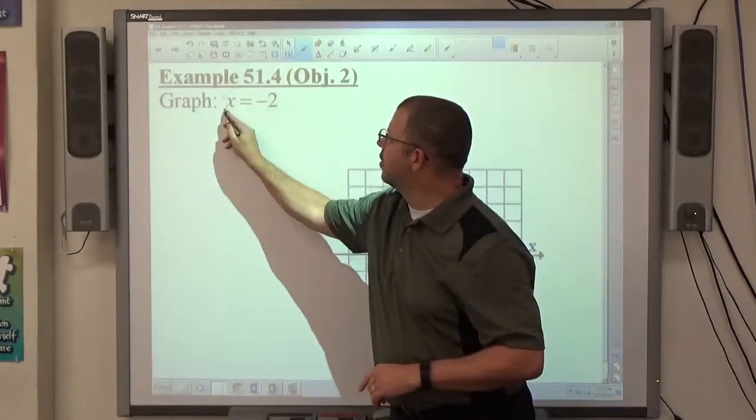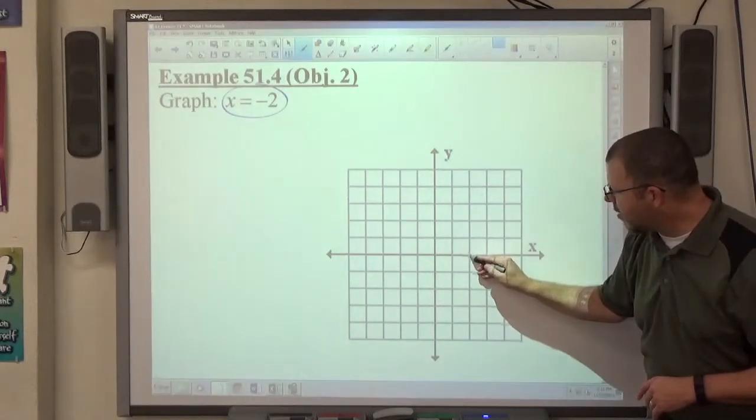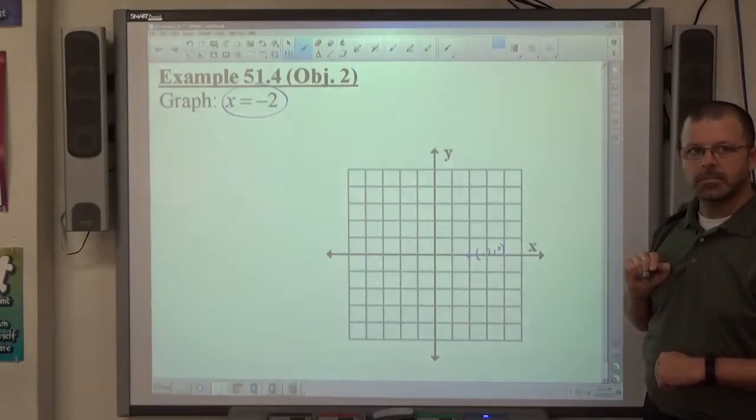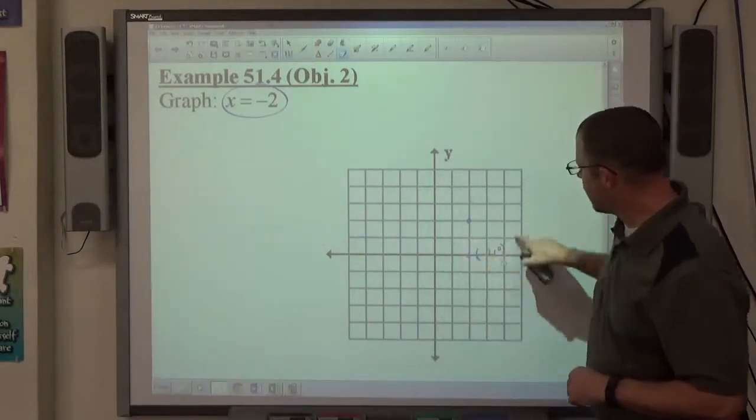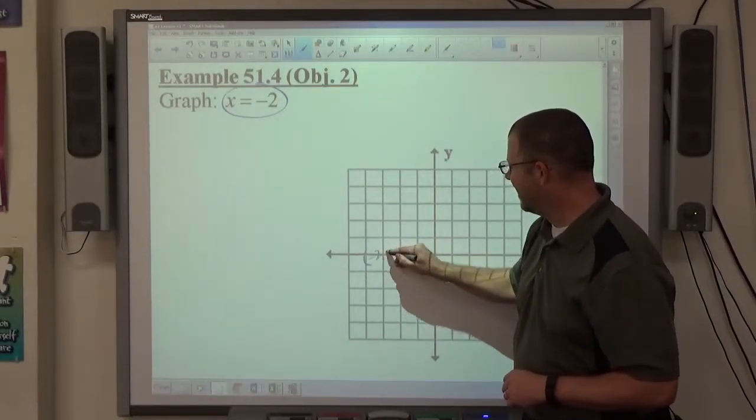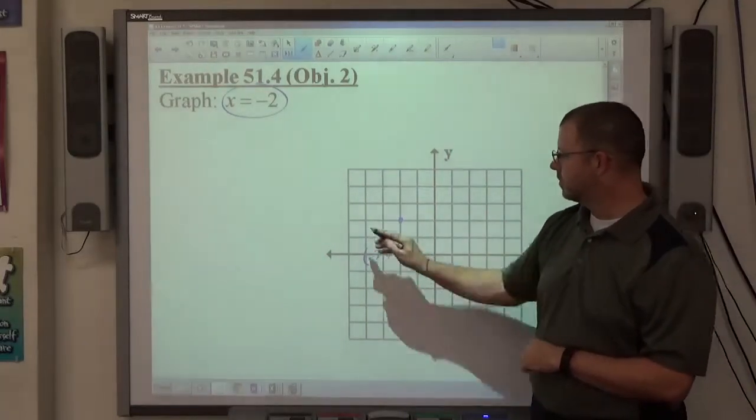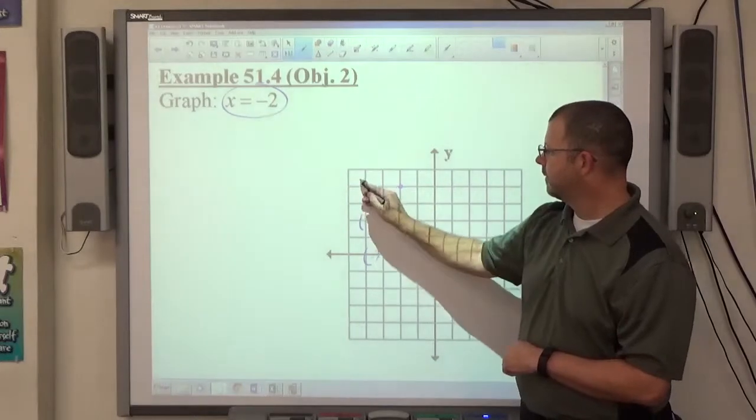Let's investigate x equals negative 2. This point right here is negative 2 comma 0, right? This point right here is negative 2, 0. What's this point? Negative 2, 2. What's this point? Negative 2, 4.